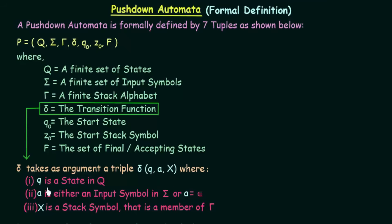Q is a state from the set of states Q — the small letter Q denotes one of the states from the set. A is either an input symbol in sigma or A is equal to epsilon, meaning it can be an input symbol or an empty symbol. X is a stack symbol that is a member of gamma — the finite stack alphabet — so X is a symbol present in the stack.